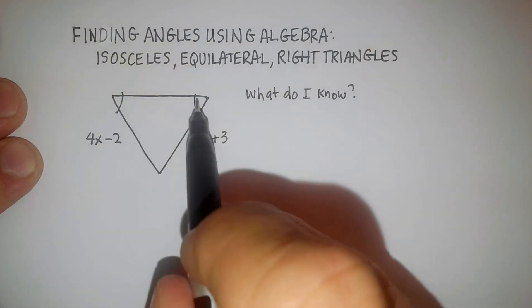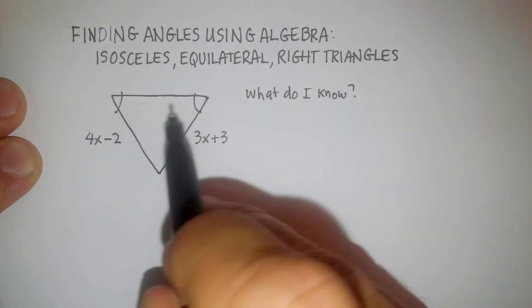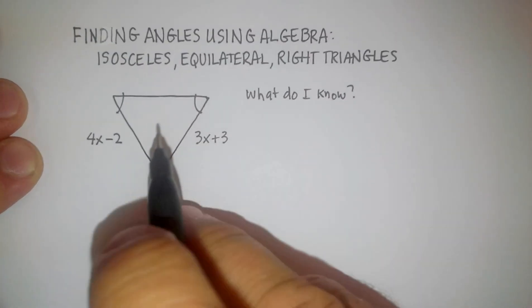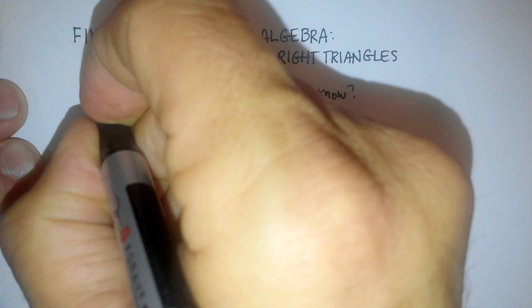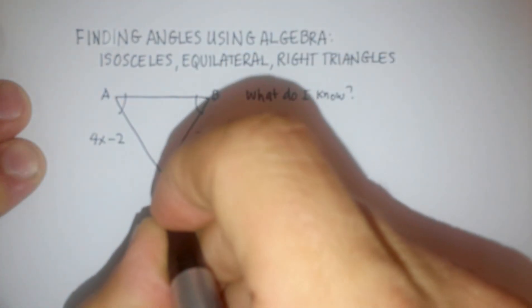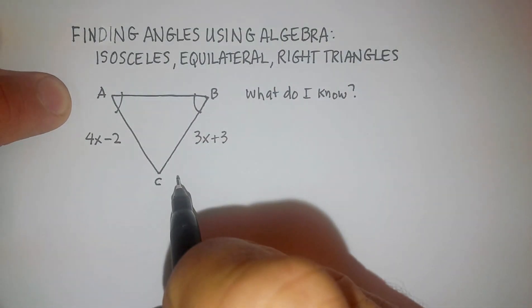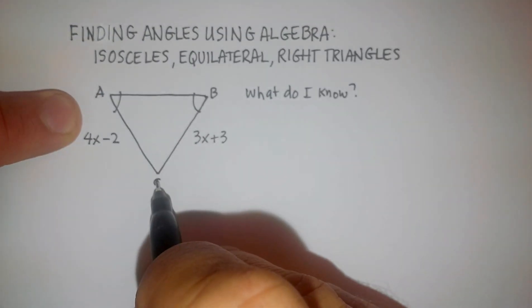Now I know that this angle and this angle are equal because of the markings that are here. And so I have to ask myself, and for the sake of writing things down, let's just go ahead and label our own labeling system. We'll call it A, B, and C.